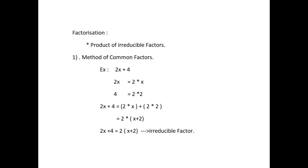We need to develop systematic methods to factorize these expressions. The first method is the method of common factors. For example, consider 2x plus 4. Here 2x equals 2 into x, and 4 equals 2 into 2. Therefore, 2x plus 4 equals 2 into x plus 2 into 2. Notice the factor 2 is common in both terms. By the distributive law, 2 into x plus 2 into 2 can be written as 2 into (x plus 2). Thus, the expression 2x plus 4 is the same as 2(x plus 2). These factors are irreducible.